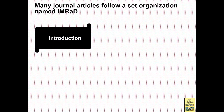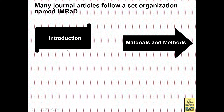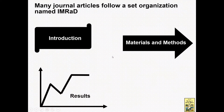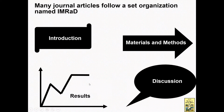As mentioned, many journal articles follow a set organization named IMRaD. IMRaD stands for I for Introduction, M for Materials and Methods, R for Results, and D for Discussion. So IMRaD stands for Introduction, Materials and Methods, Results, and Discussion.